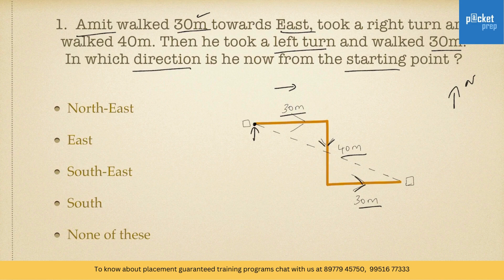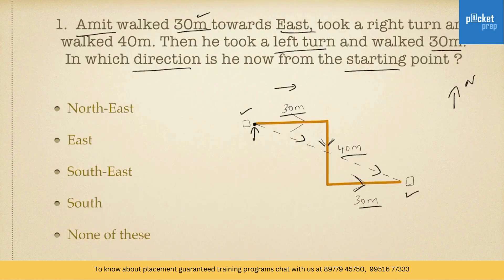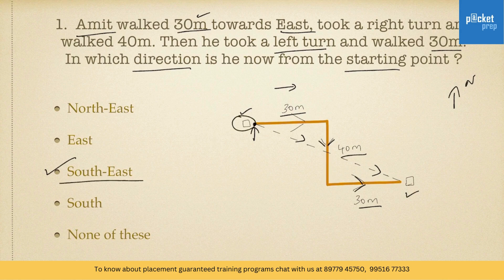In which direction is he from the starting point? This is Amit's starting point and this is where he is at present. The direction from starting point to current position is this way. Looking at the map, this direction indicates south-east. So Amit is towards the south-east direction from the starting point. This is the answer.